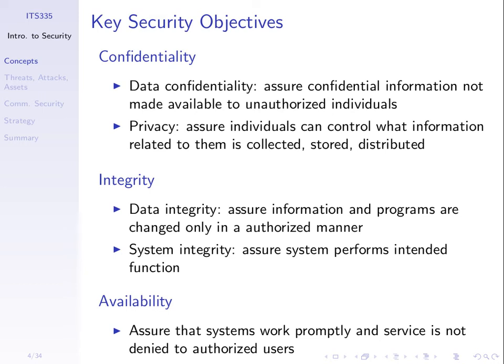Integrity is about data integrity — making sure data is only changed in an authorised manner. If someone can access a server and modify a file without you knowing, data integrity has failed. System integrity relates not to the data files but to the computer system itself — the hardware and software performing as expected. For example, if a computer system is infected with a virus or malicious software, software like Microsoft Word may do unexpected things. We'd like to maintain the integrity of the system so it doesn't perform in an unauthorised manner.